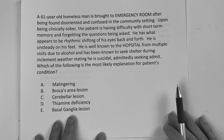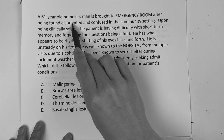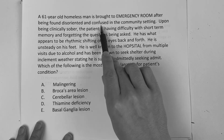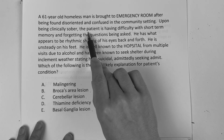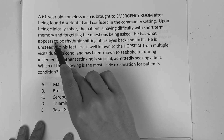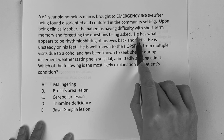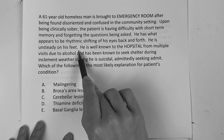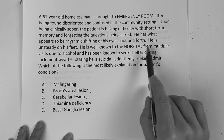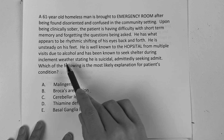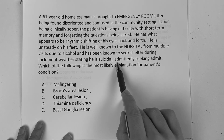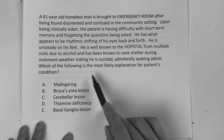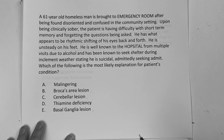So kind of a neurology-aspect question. A 61-year-old homeless man is brought to the emergency room after being found disoriented and confused in the community setting. Upon being clinically sober, the patient is having difficulty with short-term memory and forgetting questions being asked. He has what appears to be rhythmic shifting of his eyes back and forth. He is unsteady on his feet. He is well known to the hospital from multiple visits due to alcohol and has been known to seek shelter during inclement weather, stating he is suicidal, admittedly seeking admission.